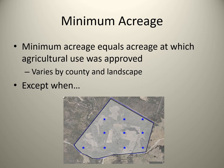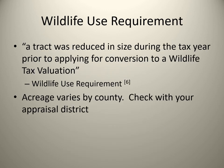However, a minimum acreage requirement may exist. If a tract of land was reduced in size during the tax year prior to applying for conversion to a wildlife tax valuation, it needs to meet the minimum acreage requirements. This minimum varies by county and the state average is 16.6 acres. Check with your appraisal district if your property was reduced in size the prior tax year.